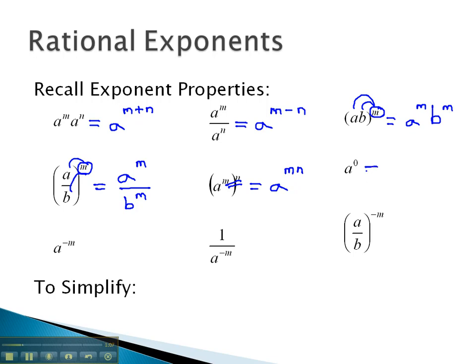You may also recall that anything with a zero exponent on it will always divide out to 1. This does not mean an exponent of 1, a to the 1st. It means simply the number 1.